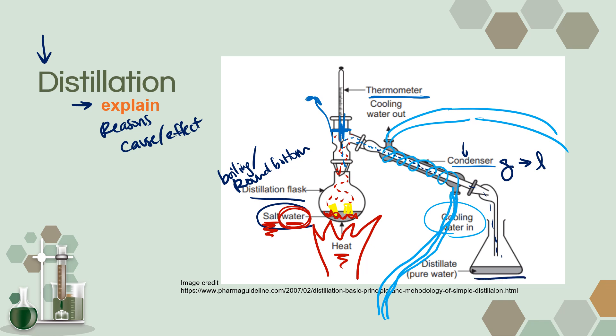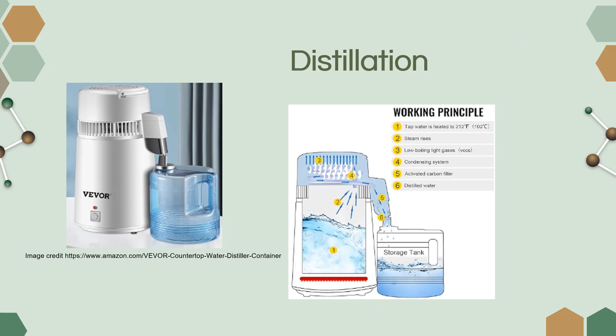We're going to call that pure water the distillate—the product of distillation. Because the salt and the water have different boiling points, and because water's boiling point is lower, it's going to evaporate first. Because we're adding that cool water on the outside of the condenser, the water vapor is going to condense back to liquid water, and we can collect that pure water. Here we have explained distillation.